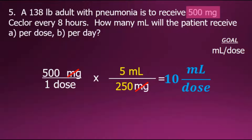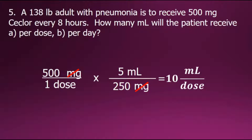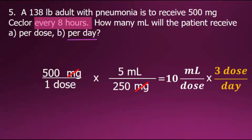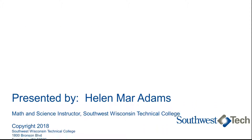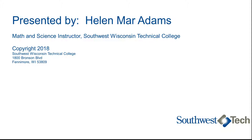The second question asks how many milliliters per day. The doctor's order was every eight hours, and with a day containing 24 hours, we divide by eight, giving us three doses per day. Using that as a conversion fraction to convert from dose into day, we cancel out the common factor of dose and perform the indicated multiplication to give 30 milliliters per day for the second answer.